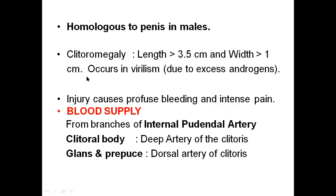A clinical condition called clitoromegaly may exist where the length of the clitoris may increase to more than 3.5 cm and width more than 1 cm. This usually occurs in virilism due to excess androgens. Injury causes profuse bleeding and intense pain. Blood supply comes from branches of the internal pudendal artery. The clitoral body is supplied by the deep artery of the clitoris, and the glans and prepuce are supplied by the dorsal artery of the clitoris.